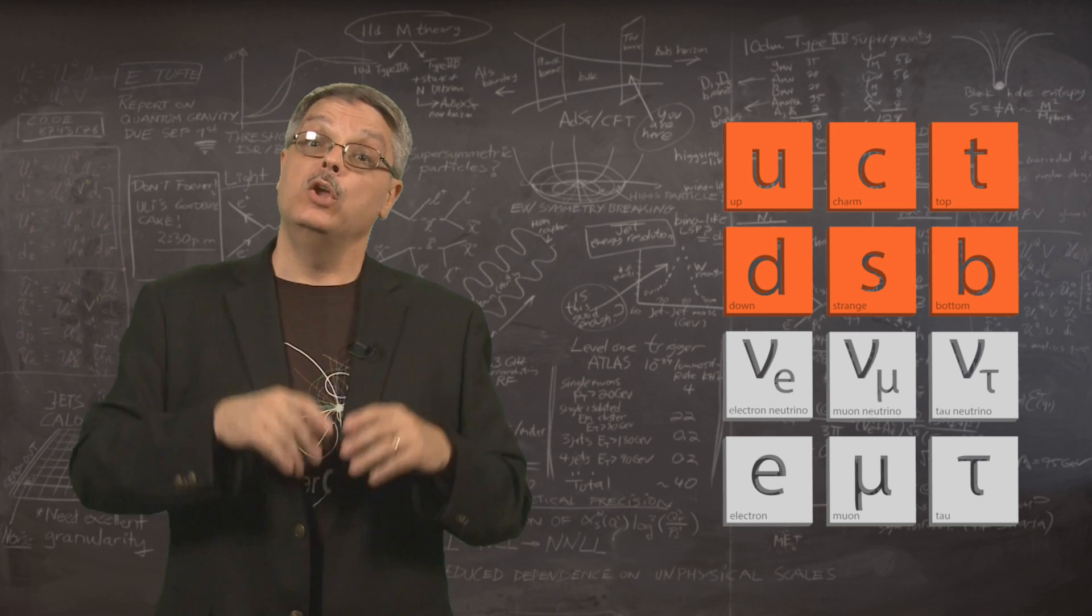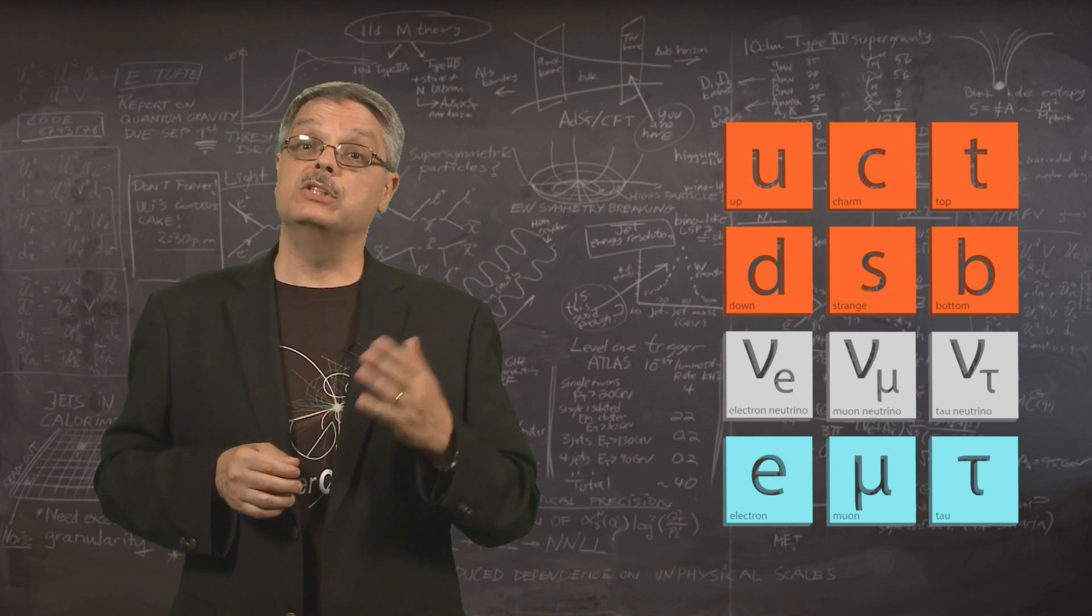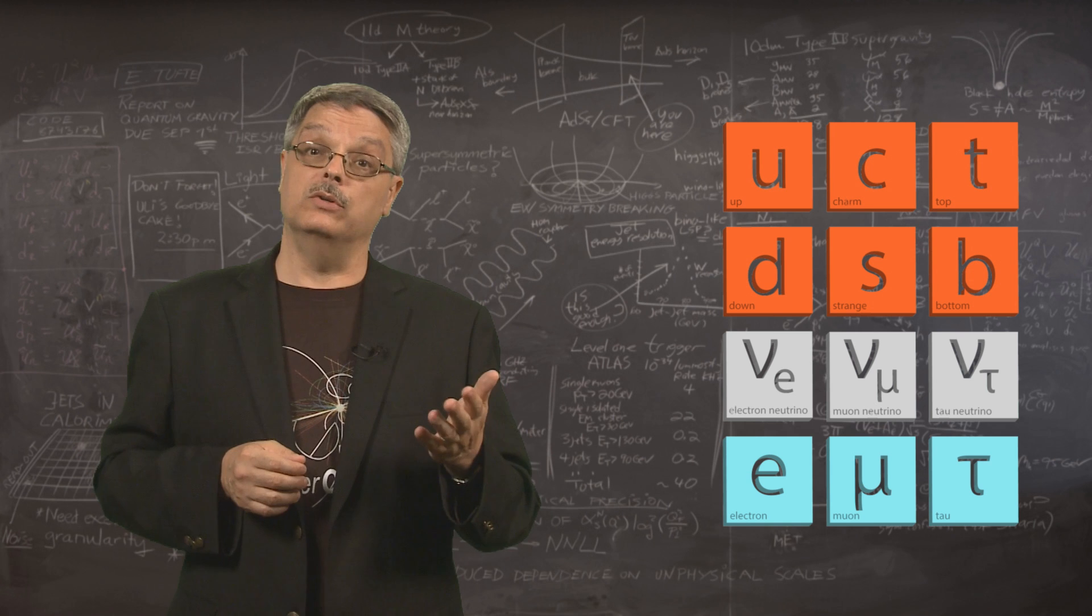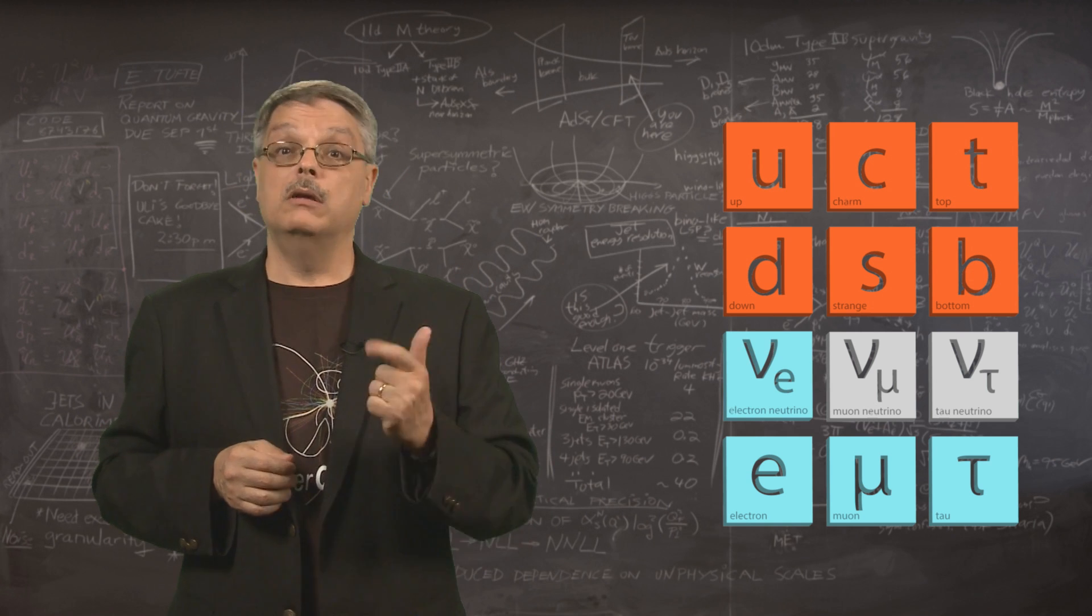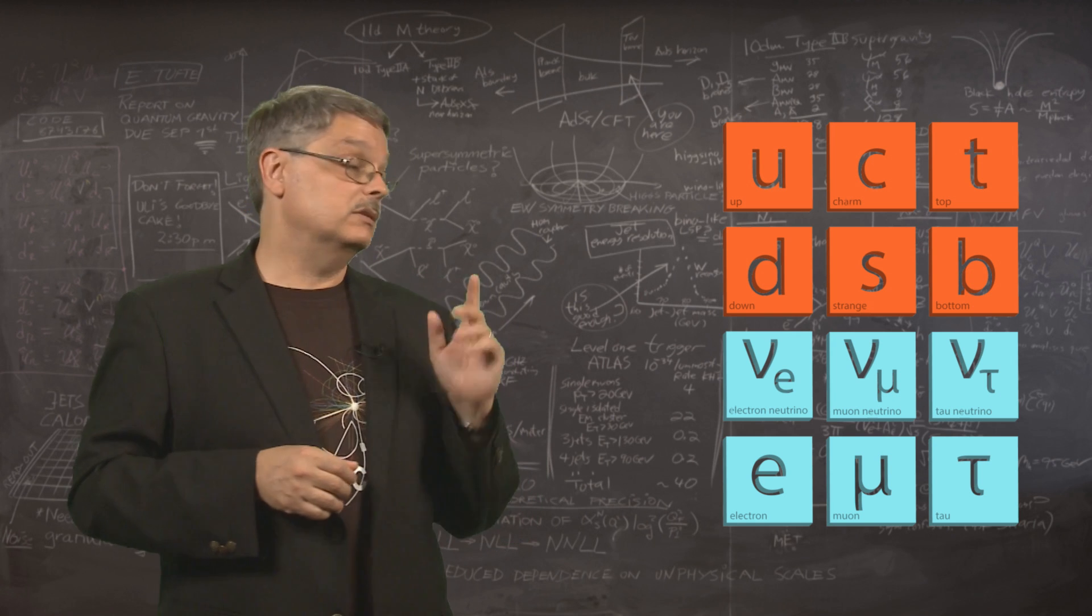In addition, we have three charged leptons called electrons, muons, and taus, as well as three neutral leptons called neutrinos – the electron neutrino, muon neutrino, and tau neutrino.